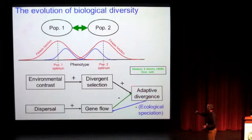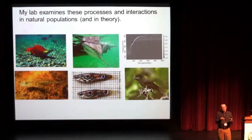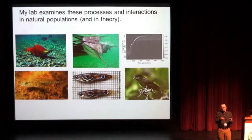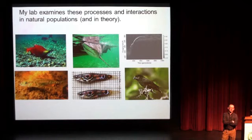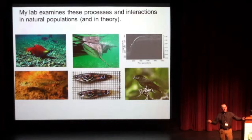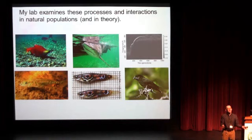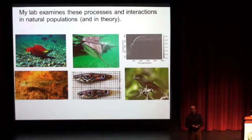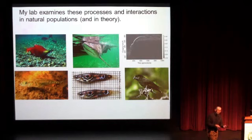My lab is interested in understanding this entire dynamic and its feedback to ecological processes in a bunch of natural systems and in theory. The reason why we study multiple natural systems is that by studying them we have the ability to see if similarities allow us to have emergent generalities, or whether those systems give us different and idiosyncratic responses that tell us additional insights into what's important for speciation and what is not.